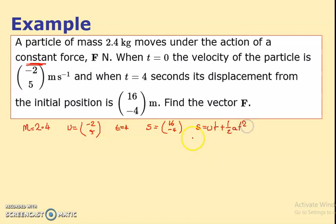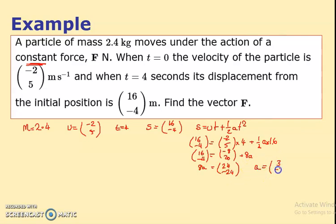So I've got s is 16i minus 4j. That looks to me like s equals ut plus half a t squared. Obviously as vectors. So I've got 16i minus 4j equals minus 2i plus 5j times 4 plus half of a times t squared. So just doing some sums, that's 16i minus 4j equals minus 8i plus 20j plus 8a. So it implies 8a equals 24i minus 24j. Divide them both by 8, a is 3i minus 3j.